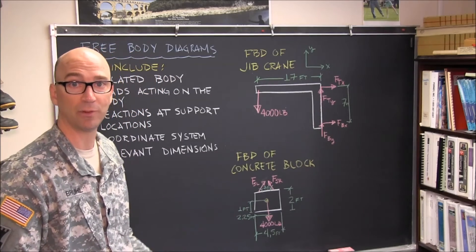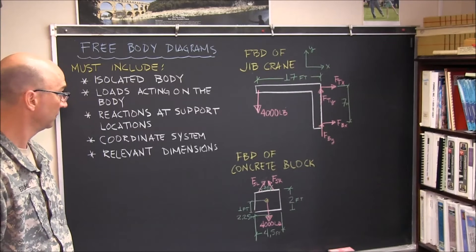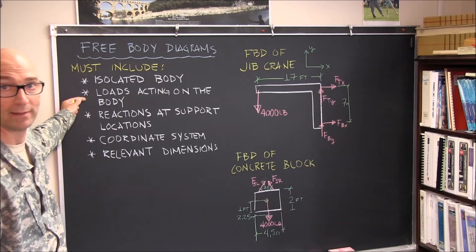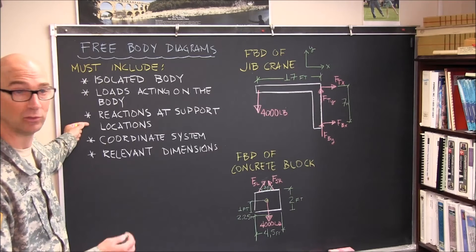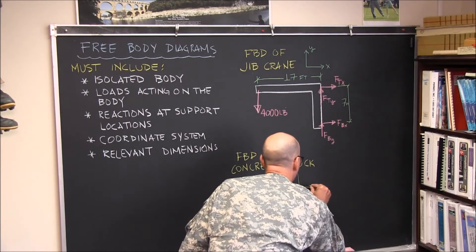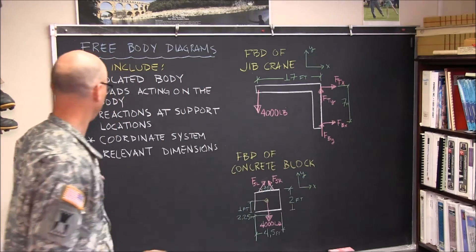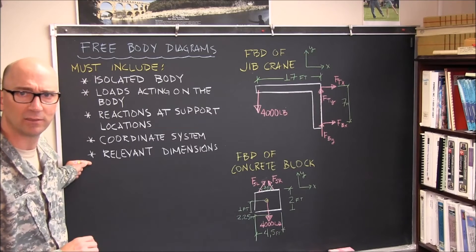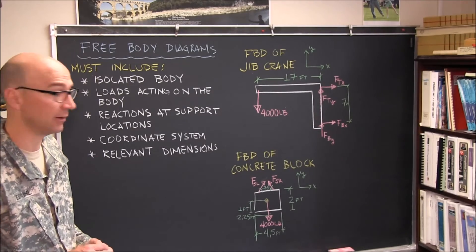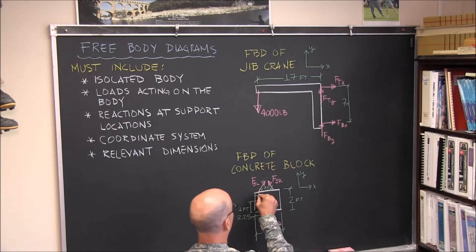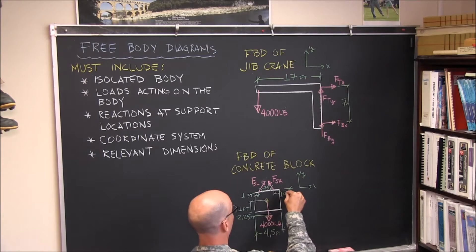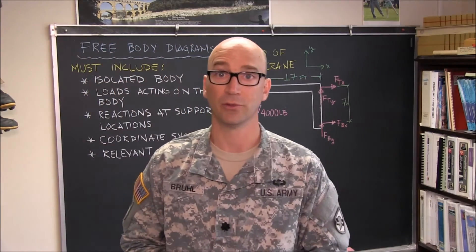Is there anything missing from this free body diagram? Think through what it must include. We've got the isolated body, the load — the self-weight of the body — and the reactions at the supports, those two cables. We don't have a coordinate system, so let's go ahead and add one. Do we have all the relevant dimensions? At first glance it looks like maybe we do, but where are each of those cables acting on the block? We know the angle, but we don't know exactly where they're acting. So we take out the tape measure again and measure that this is one foot and this is one foot from the edge, where the hooks through which those cables are physically attached.